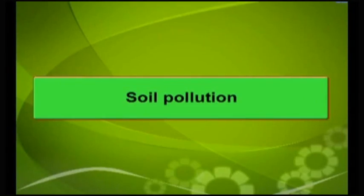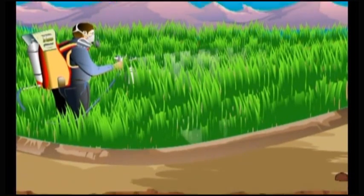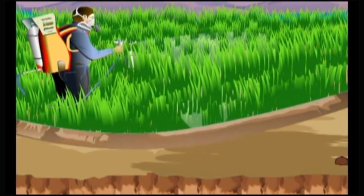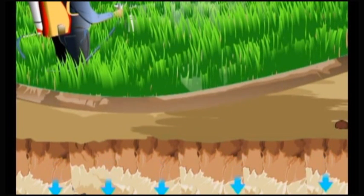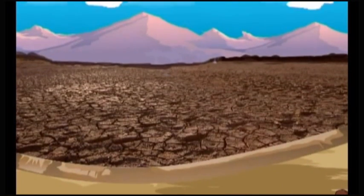Soil pollution may occur indirectly or directly. Soil pollution may change the physical, chemical, and biological nature of soil and make it unfit for plant growth, animal, and human use. Soil pollution in agricultural areas affects crop productivity and may even make the land unfit for agriculture.